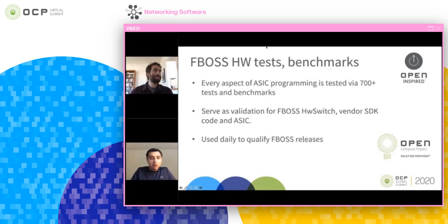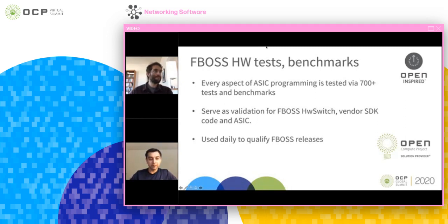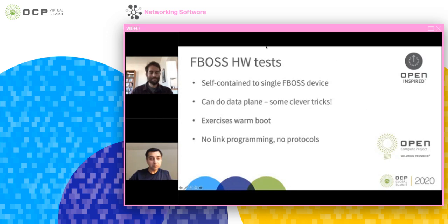Every aspect of ASIC programming is tested by 700-plus and growing tests and benchmarks. This serves as validation for FBOSS code, vendor SDKs, and new ASICs. When we get a new vendor SDK or ASIC, the first thing we do is make the tests pass. We use them daily and on a per-commit basis to qualify trunk, FBOSS releases, and fleet pushes. The tests are self-contained, run on a single-box FBOSS device, require no topology or cabling, and can exercise the data plane themselves.